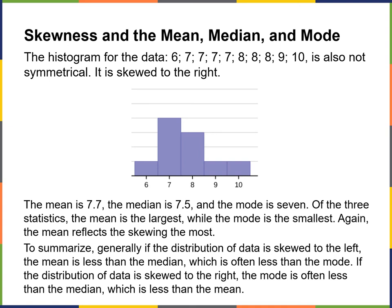Generally, if the distribution is skewed to the left, the mean is less than the median, which is often less than the mode. If the distribution is skewed to the right, the mode is often less than the median, which is less than the mean. Basically they're a flipped mirror image of each other.